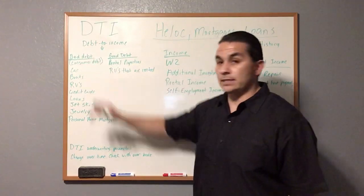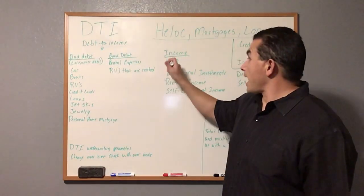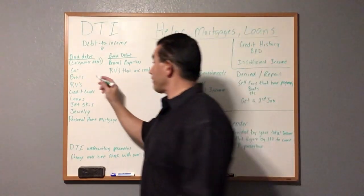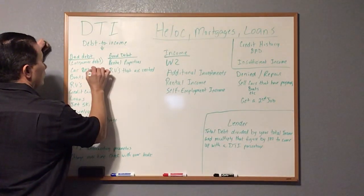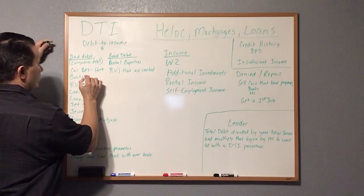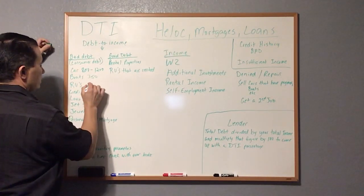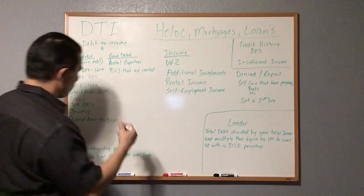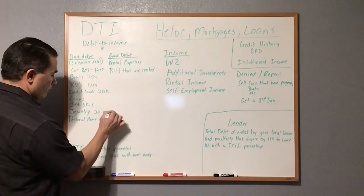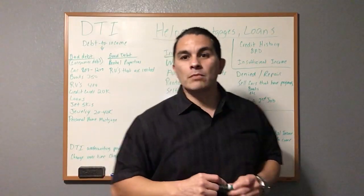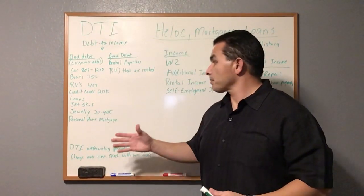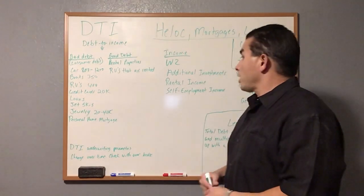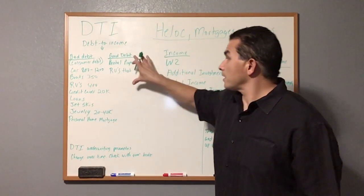The bank is going to compare your income to your good debt or your bad debt. If your bad debt is higher than your income, it's not going to be good for you. For example, some people have car payments of $800 to $1,200, a boat at $350, an RV at $400, $20,000 in credit cards, loans, jet skis, and $20,000 to $40,000 in jewelry payments — all trying to look rich while being deep in debt. The bank will look at your income and your debt.